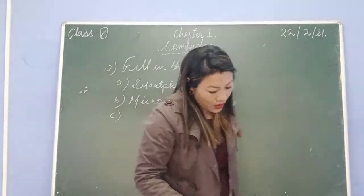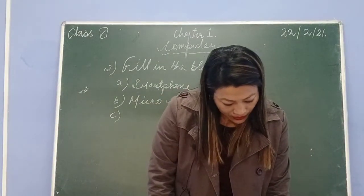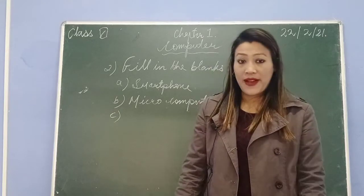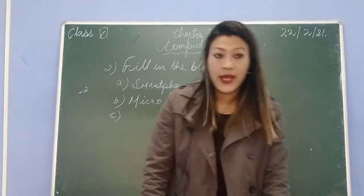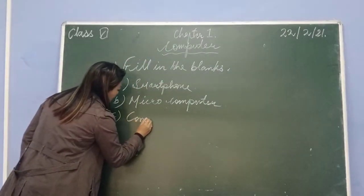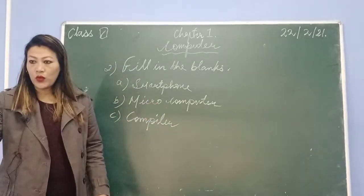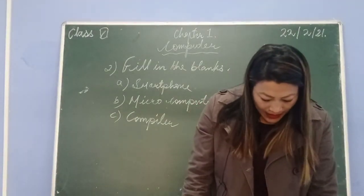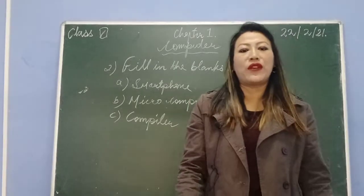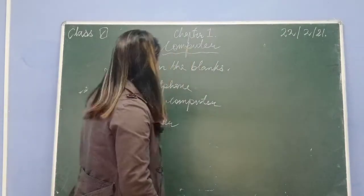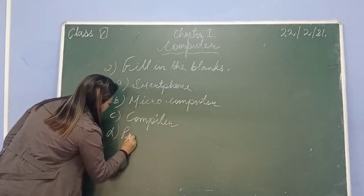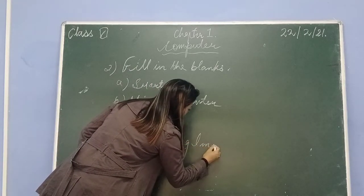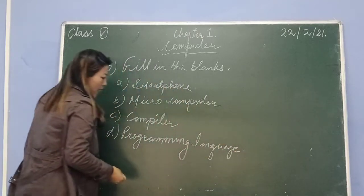Number C: a dash translates the entire program written in a high-level language into a machine-level language. I told you about language processors - three types are: compiler, assembler, and translator. For this, your answer will be compiler. Number D: a dash is a formal language designed to communicate instructions to a computer. The answer will be programming language.